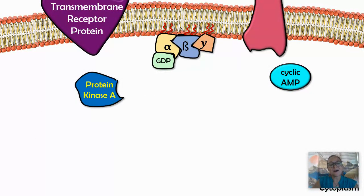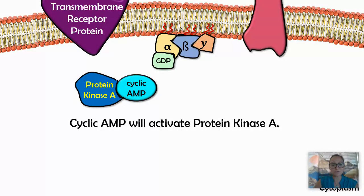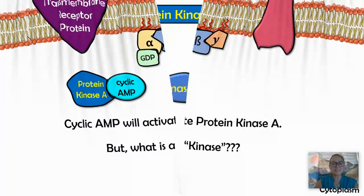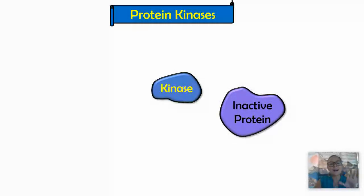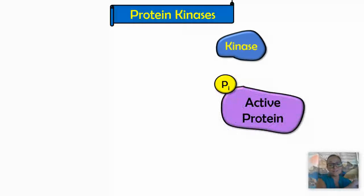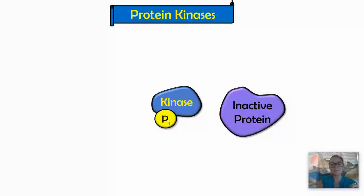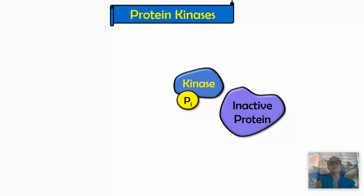This is where protein kinases come into play. Cyclic AMP attaches to and activates protein kinase A. A kinase is an enzyme — because it ends in '-ase.' Kinases activate proteins by phosphorylating them. We have hundreds of different kinases in our cells — about 2% of human genes code for kinases. A kinase takes a phosphate group and attaches it to a protein, making that protein active.